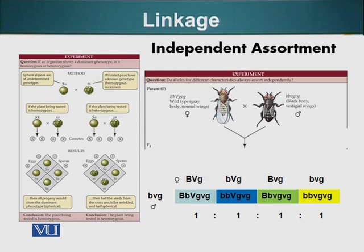He crossed two flies. One was heterozygous for the body color and the wings. The wild type body color is gray, so we will call it capital B, small b. Heterozygous for body color is capital B, small b. Homozygous would be capital B, capital B, and homozygous recessive would be small b, small b.